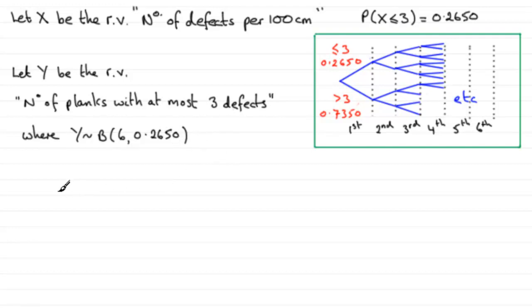So when it comes to this question, we're asked to find the probability that there are fewer than 2 planks that have at most 3 defects. We're looking for the probability then of Y being less than or equal to 1.